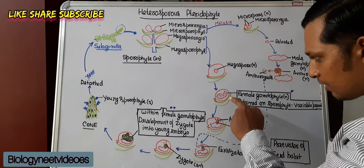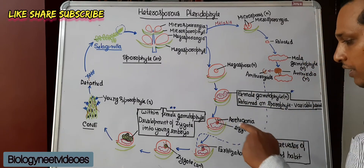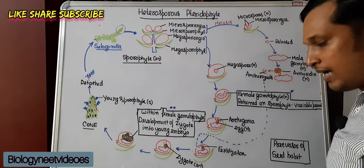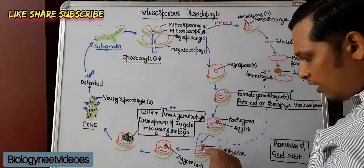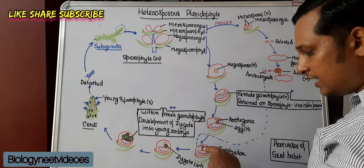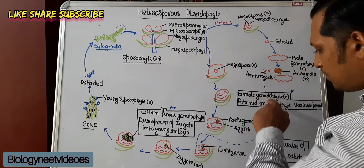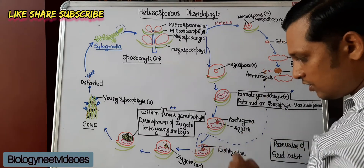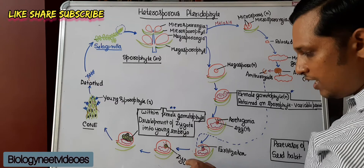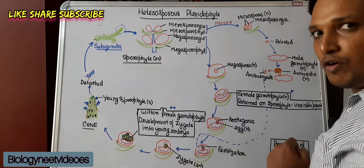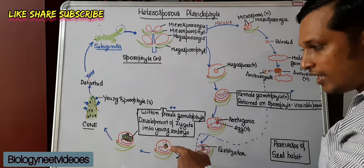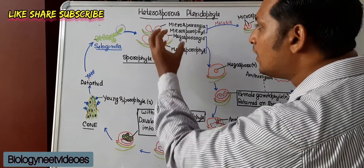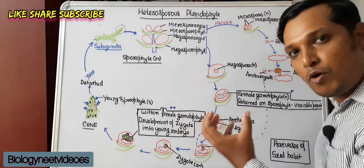What happens to the female gametophyte? The female gametophyte develops archegonia containing a haploid egg through mitosis. The egg in the archegonia is fertilized by antherozoids. Once fertilization occurs, a zygote is formed in the archegonia, which is diploid. The zygote then develops into a young embryo. All these events are occurring inside the megasporangium only.